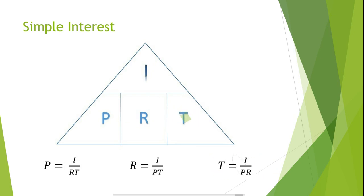Finally, if we want to solve for the amount of interest in an investment that earns simple interest, all we need to do is cover up I, giving us principal times rate times time — which is, of course, the formula used to solve for the total amount of interest earned or paid in an investment or loan that earns simple interest.